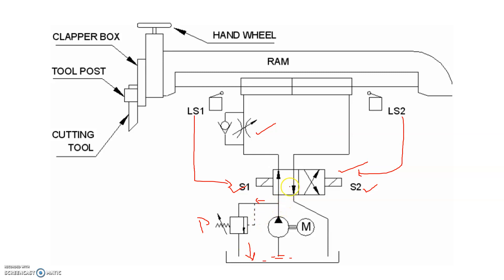Pressurized fluid enters into the direction control valve. The direction valve is controlled by the solenoid by means of limit switches. When the piston rod is extended to its limit, limit switch LS1 will be activated and the solenoid will act on the direction control valve, shifting it to the next position.